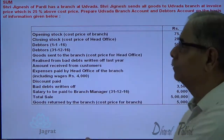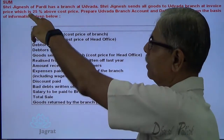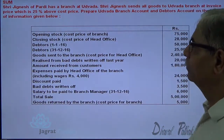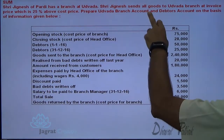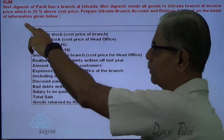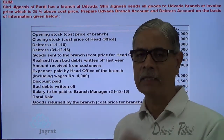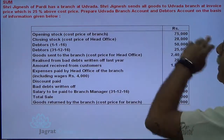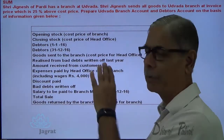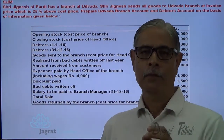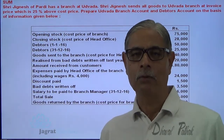This is the sum which I intend to solve. Shri Jignesh of Pardi has a branch at Udwala. Shri Jignesh sends all goods to Udwala branch at an invoice price which is 25% above cost price. Prepare Udwala branch and data's account on the basis of following information. From that, you are required to prepare branch account and data's account.